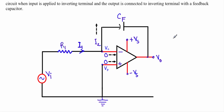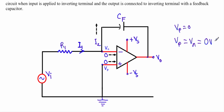The non-inverting terminal is directly grounded, therefore VP will be equal to zero. As the circuit is in negative feedback, the inverting terminal voltage and non-inverting terminal voltage will be equal. Since VP equals zero, the inverting terminal voltage VN will also be equal to zero. The current through the inverting terminal and non-inverting terminal will be equal to zero.